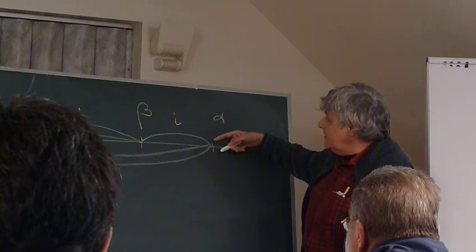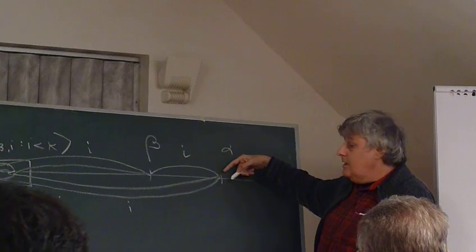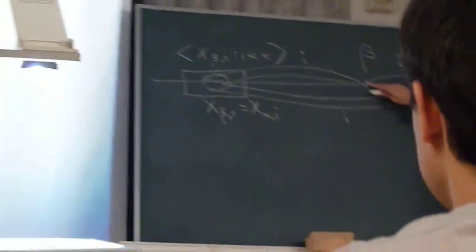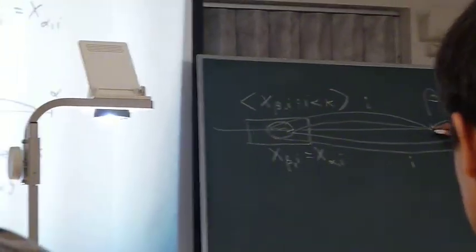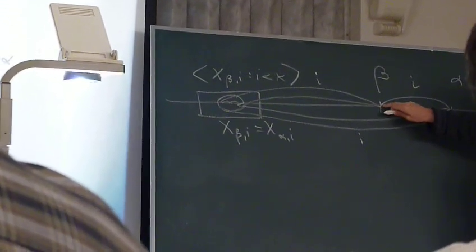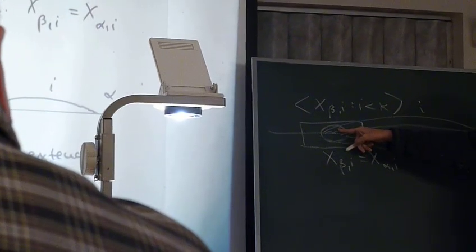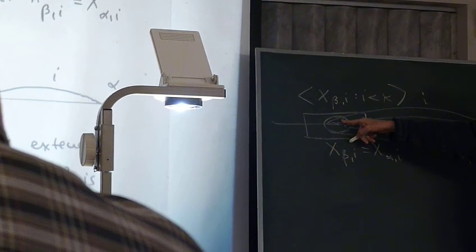And now, what we observe is that from the point of view of alpha, we can extend this set by one step, in one step by beta. We can add beta as a next element to that set, so this is certainly not an unextendable set, so we reach a contradiction.